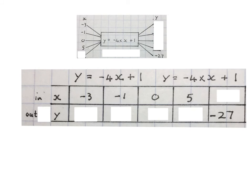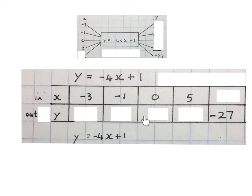In algebra we have a shorter way of writing minus four times X. We just write minus four and X right against it, plus one. Then to find these values I still write down this equation. I substitute the minus three in the place of X.